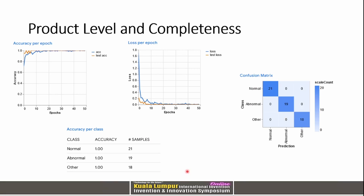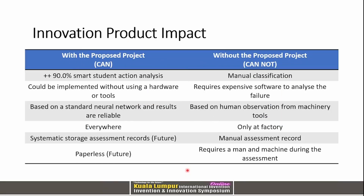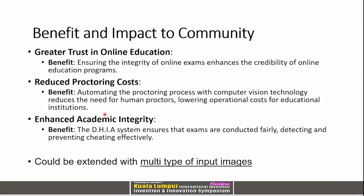This shows the accuracy per class for our proposed product. In terms of what the system can do, 90% smart student action analysis accuracy was achieved compared to manual methods. The system can be used with a web camera or handheld mobile devices.